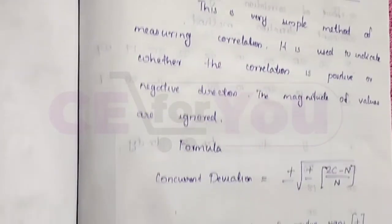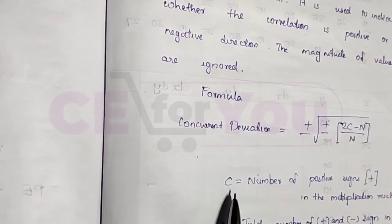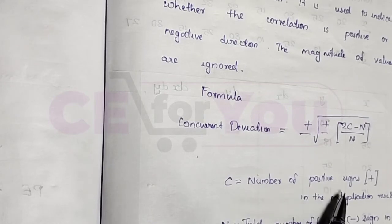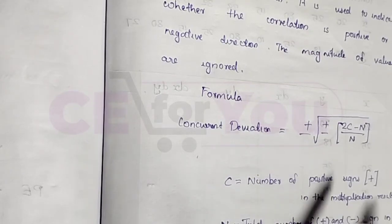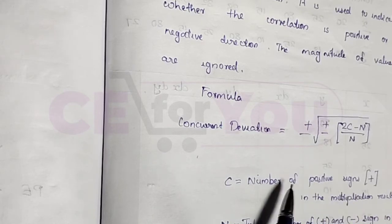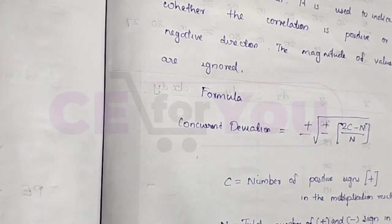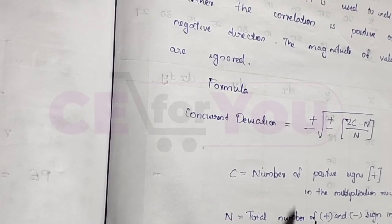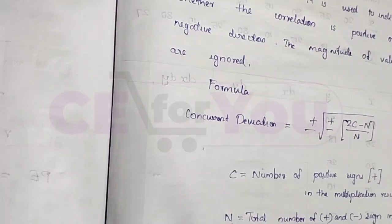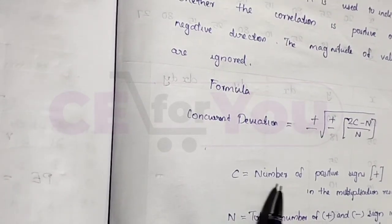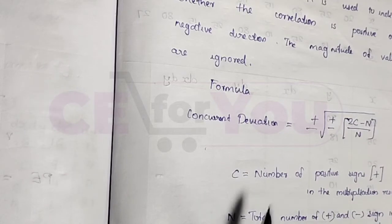Here, c is equal to the number of positive signs, and n is equal to the total number of plus and minus signs.